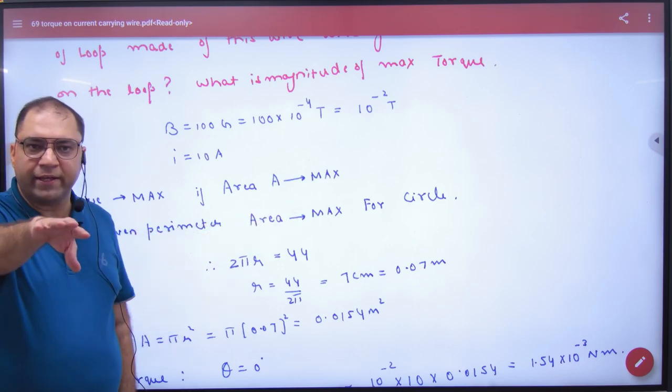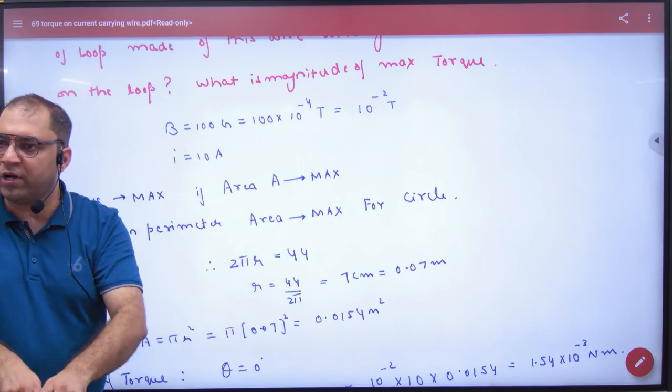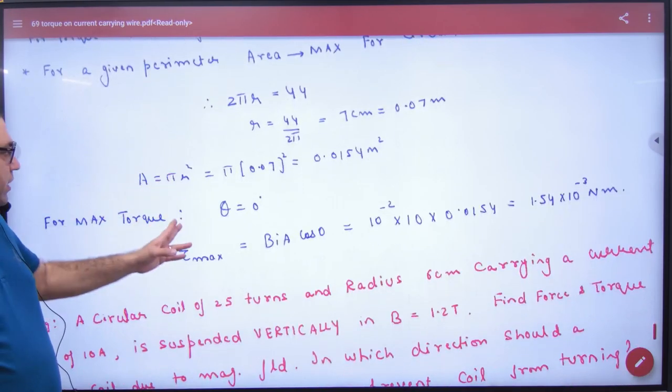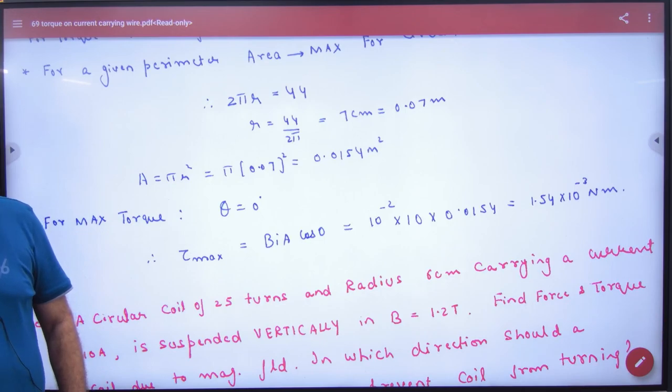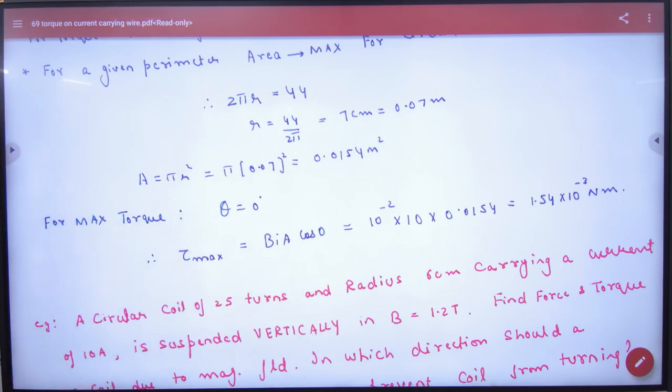So circle will be made. So length 44 centimeter equals 2πr. R has come. So what will be the area of circle? πr². So you have asked maximum torque. So what will we use here? The theta, what will we do? Zero, loop and B. Zero. N B I A answer. Clear here.